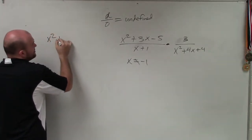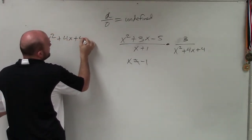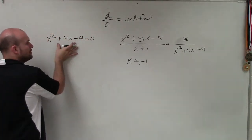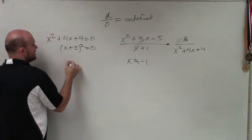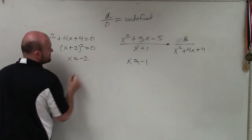Well, the best thing to do would be to factor and say, alright, well, what if x did equal 0? What would be those values? And then I could say, well, x plus 2 squared equals 0, and therefore, x equals negative 2.